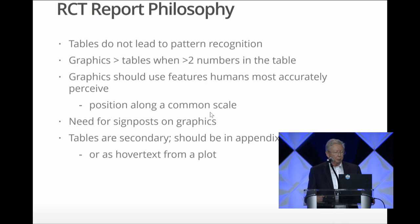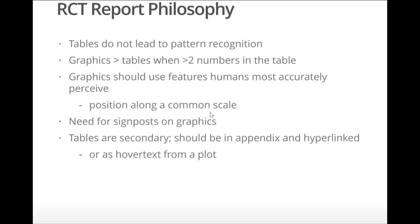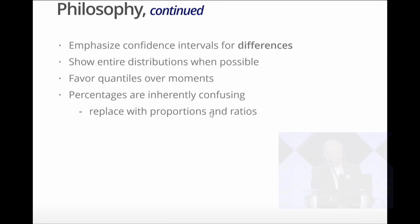The philosophy is that tables really do not lead to pattern recognition and graphics are better. If you have more than two numbers, a graph is better than a table. Graphs should use features that humans are really good at perceiving, such as position along a common scale. We need signposts on the graphics. When I'm reading a long report, I lose track of where I am in terms of which subjects are currently being displayed or analyzed. Tables are secondary. They can be in an appendix or hyperlinked, or have pieces of tables as hover text from a plot.